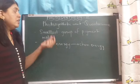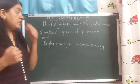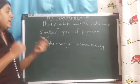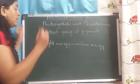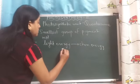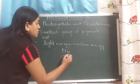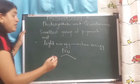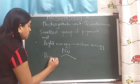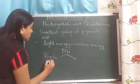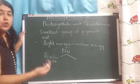What is the smallest group of pigment? Chlorophyll A and carotenoids. They convert light energy into chemical energy. Now, the photosynthetic unit or quantazone consists of carotenoids and there is a reaction center, or we call it as a photo center.